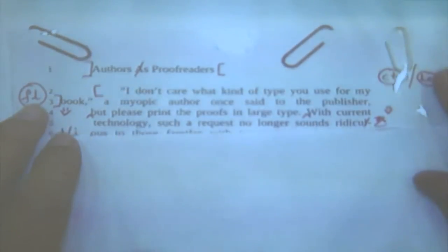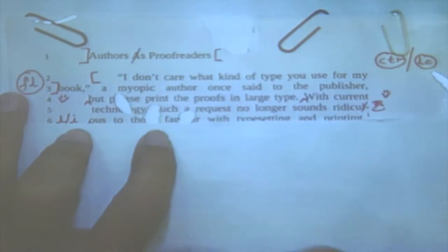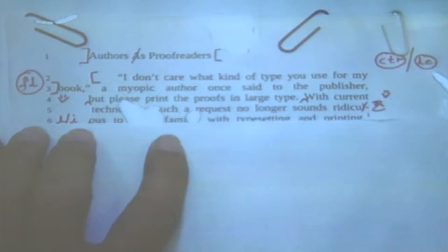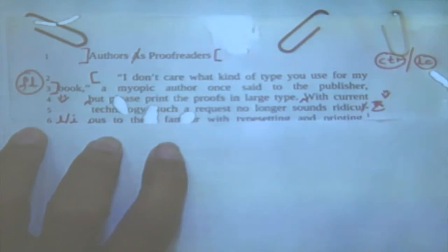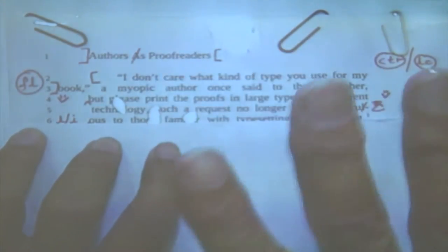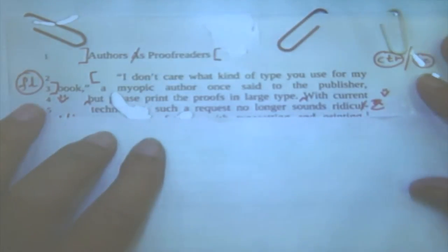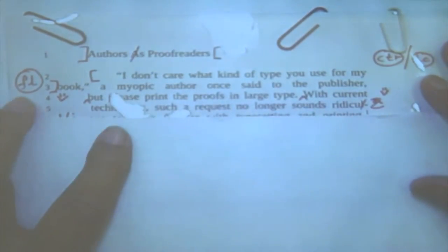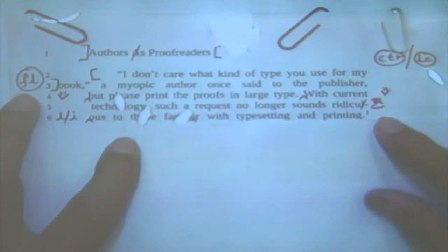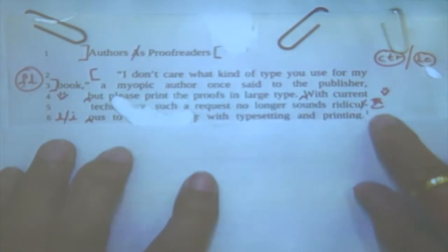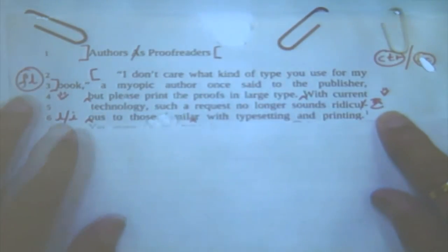Then 'with current technology' is inside because he has stopped and now you are coming out — the author who is saying has stopped. So don't go into minor details; we have to cover 50 errors and will discuss again later. 'With current technology, such a request no longer sounds ridiculous.' In 'ridiculous,' what is wrong? See here — 'L' has been crossed out and the space closed.